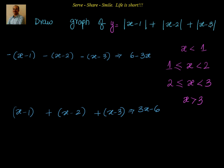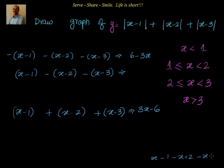Now suppose x is between 1 and 2. The first part will be positive and the last two will be negative. So we have: x minus 1, minus(x minus 2), minus(x minus 3), which simplifies to x minus 1 minus x plus 2 minus x plus 3. The x terms cancel giving 4 minus x. So for 1 less than or equal to x less than or equal to 2, y equals 4 minus x.